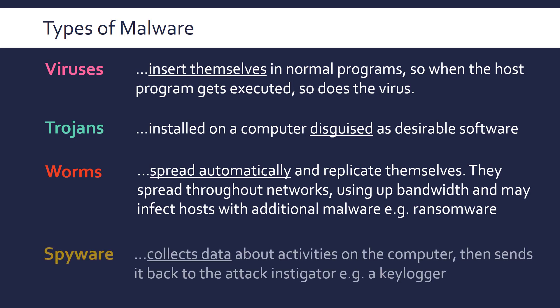The final category is spyware, which collects data about activities on your computer and sends it back to whoever instigated the attack. A keylogger is an example — it records the keys you type on your keyboard, often to find a password, and sends it back to the person who deployed the spyware. Spyware can arrive via a virus or a worm. In fact, some people think BadRabbit ransomware was actually installing spyware as its main purpose — to gather more information about people. A Trojan would also be a very effective method to distribute spyware, as the program on your computer could secretly be recording information.